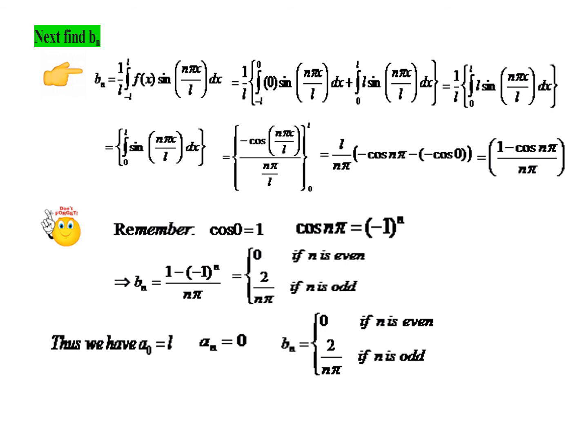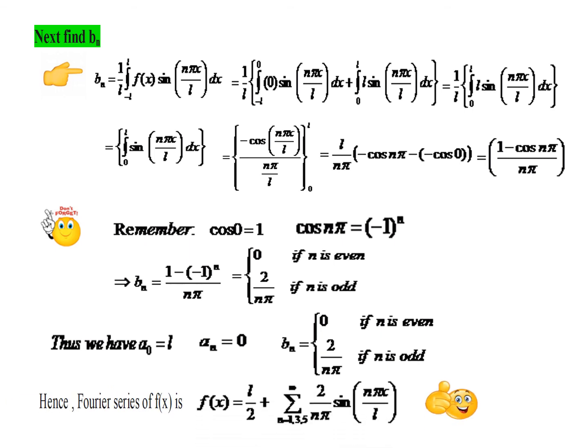Now we have all the values: A₀ = L, Aₙ = 0, and Bₙ = 2/(nπ) for odd n. Substituting into the Fourier series: f(x) = L/2 + Σ [2/(nπ)] sin(nπx/L), where the summation runs over n = 1, 3, 5, … to infinity, since Bₙ is nonzero only for odd integers.